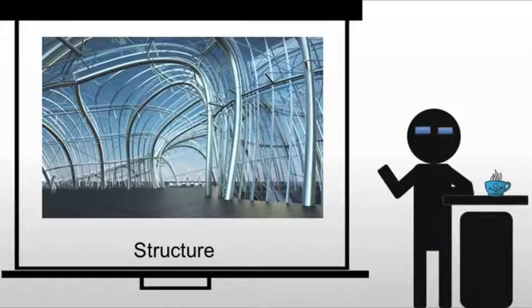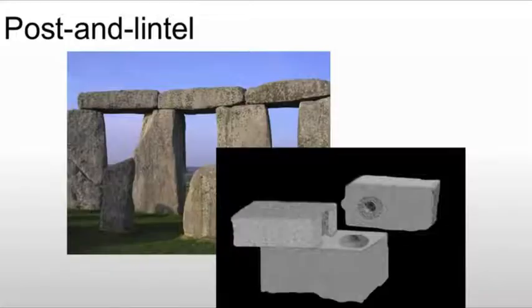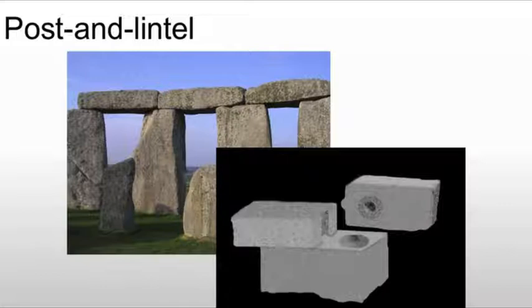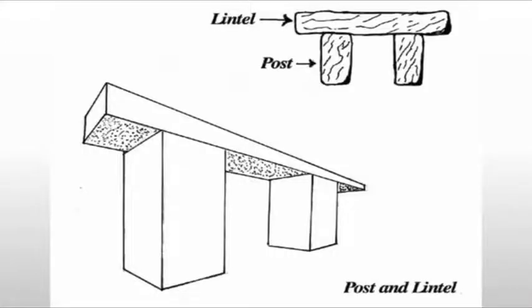We're going to start with architecture by looking at elements of structure, starting with the most basic: post and lintel. We're looking at systems of construction or structural support. A post and lintel is where we have two uprights with a lintel — the horizontal piece — run across the top. This is the most basic form of construction. In fact, if you ever played with Legos or wooden blocks, you've probably created basic post and lintel construction.